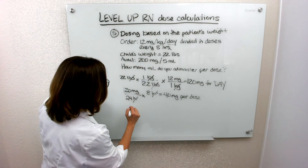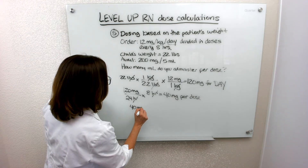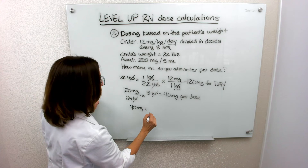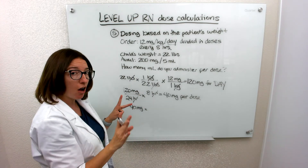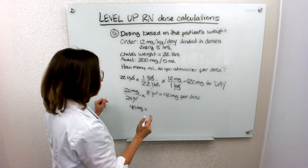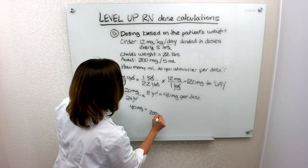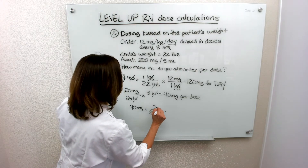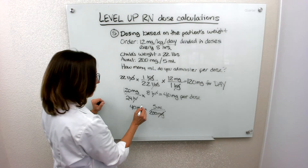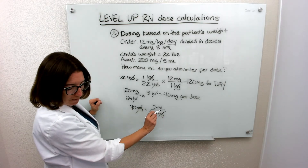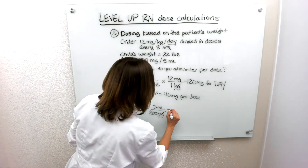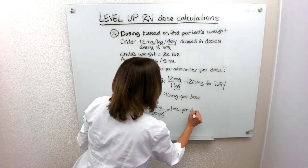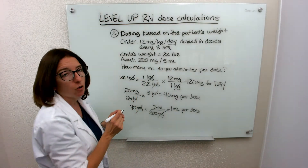So every eight hours we give that child 40 milligrams, but again we're asking for milliliters, so we have to look at the medication available and its concentration. We take the 40 milligrams and we have 200 milligrams in 5 milliliters. We put 200 milligrams on the bottom and 5 milliliters on top, the milligrams cross off, and we end up with 1 milliliter per dose, which is every eight hours.